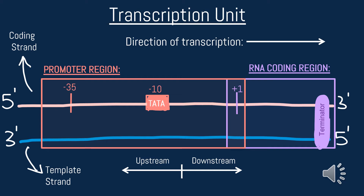RNA reads three to five prime while the direction of transcription is five to three prime. This tells us that the blue strand is our template strand that nucleotides of RNA are built off of, and the pink strand is our coding strand that has a base sequence that codes for our RNA being made, except it has the base thymine while RNA has uracil. Next we have the promoter region with a negative 35 site, a negative 10 or TATA box site, and a plus one site.